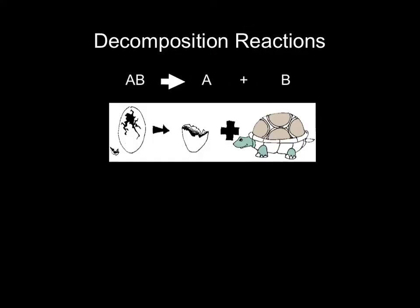The next type of reaction is a decomposition reaction — it's kind of the opposite of a synthesis reaction. Decomposition means to decompose or break down. In the sample reaction, we have a compound AB that breaks down to produce A and B. If you look at the cartoon, you see an egg — the only reactant — and after the arrow we have the broken eggshell and a turtle inside. They are not joined together anymore; they're separated, which represents what a decomposition reaction looks like.